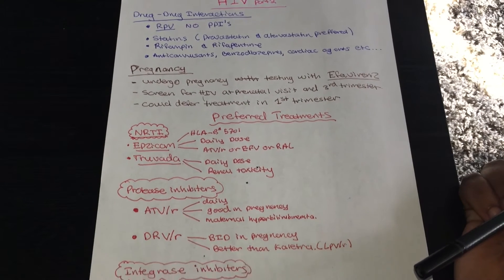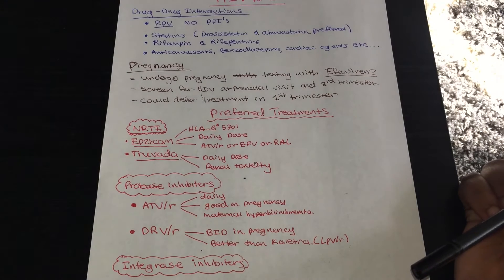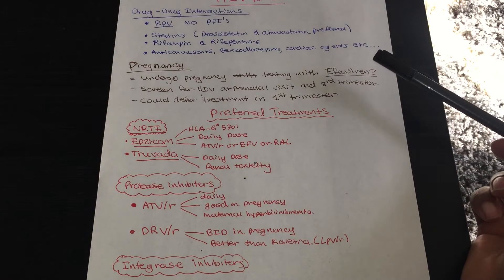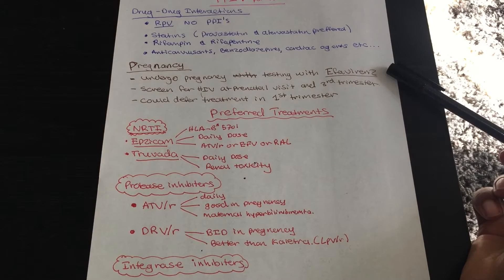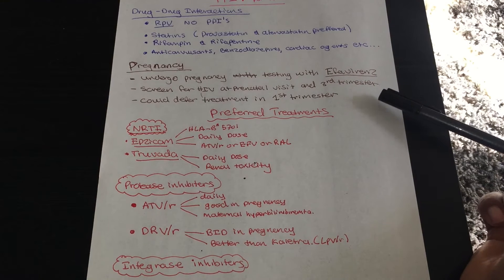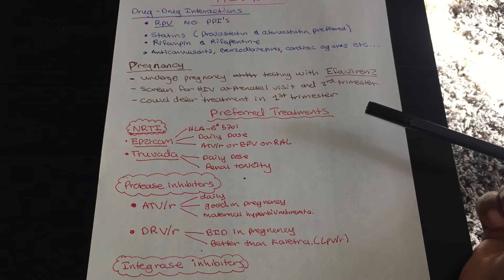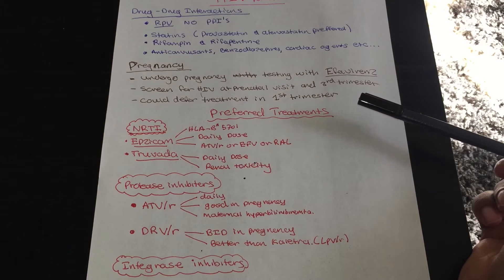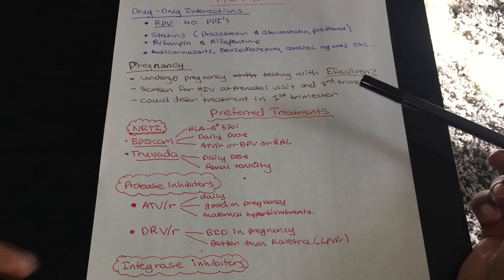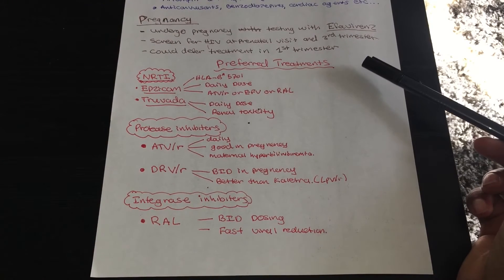When it comes to pregnancy, efavirenz is a drug that requires pregnancy testing due to its teratogenicity. Whenever a woman is pregnant she should be screened for HIV at a prenatal visit and also in her third trimester. If a woman has HIV and is pregnant, treatment can be deferred in the first trimester, but by labor, if her RNA copies are undetectable she can undergo normal vaginal birth; if detectable, she will require a c-section.